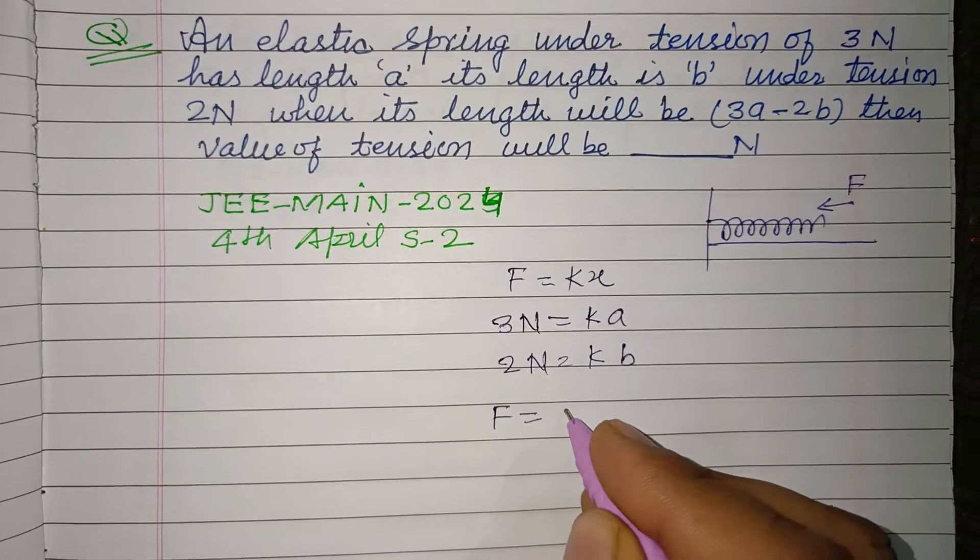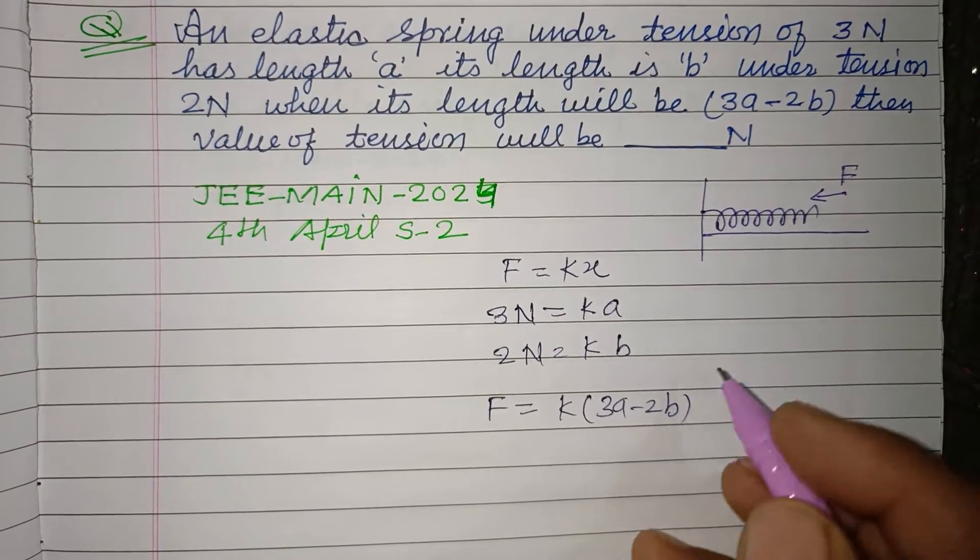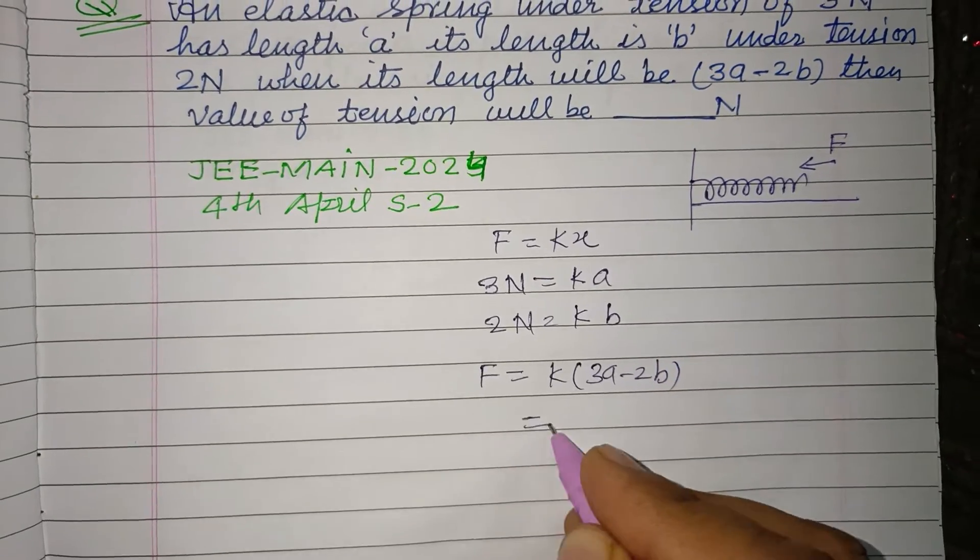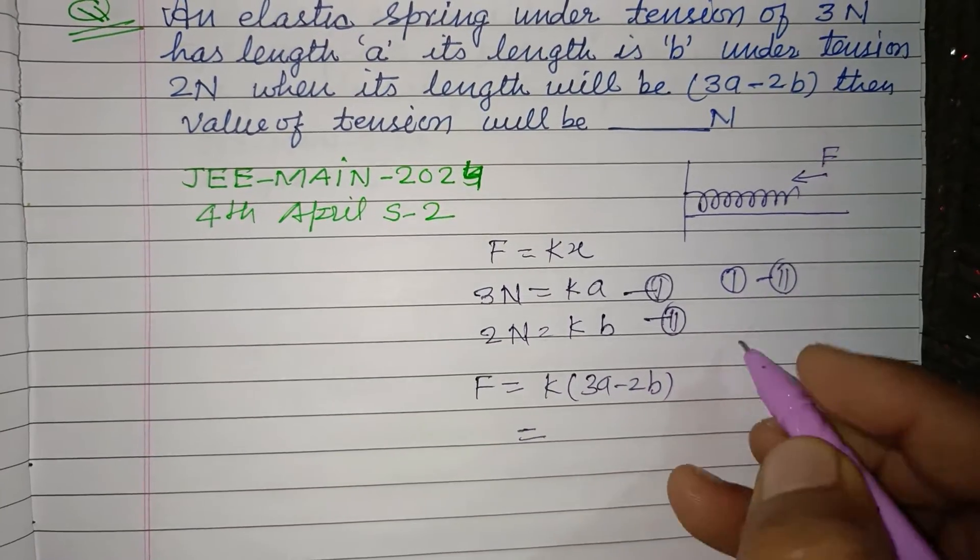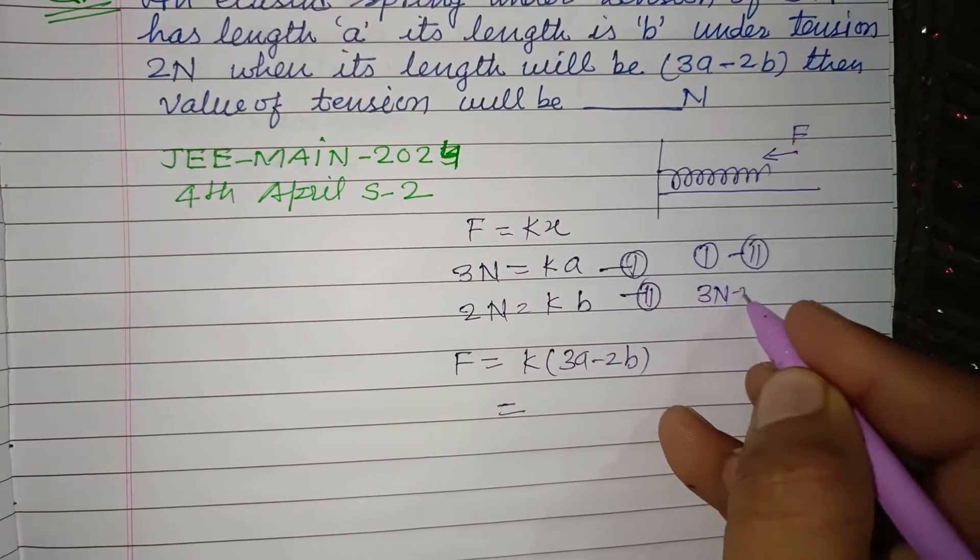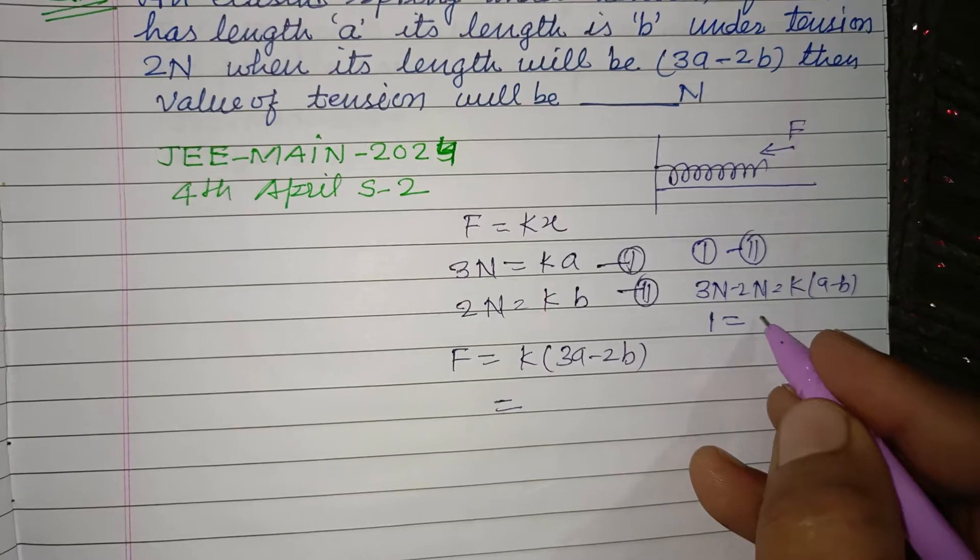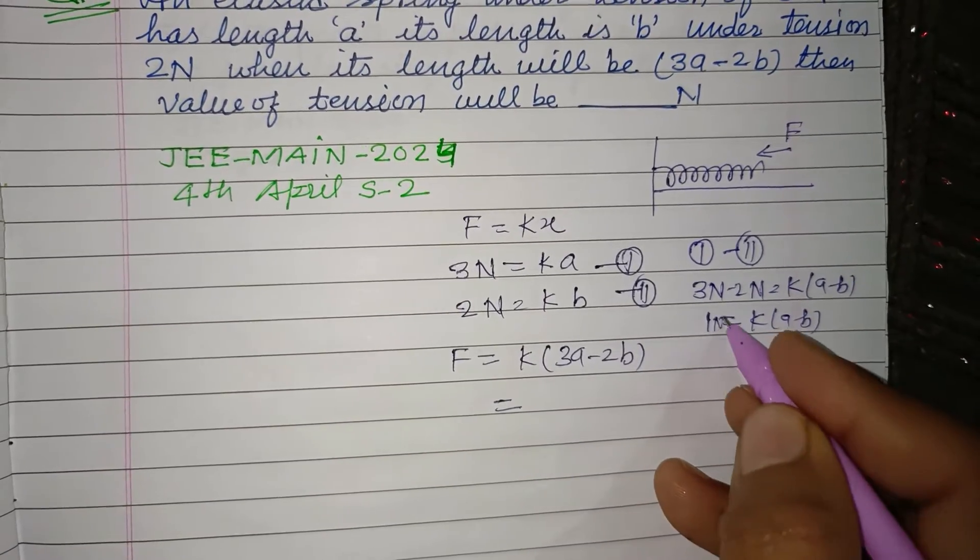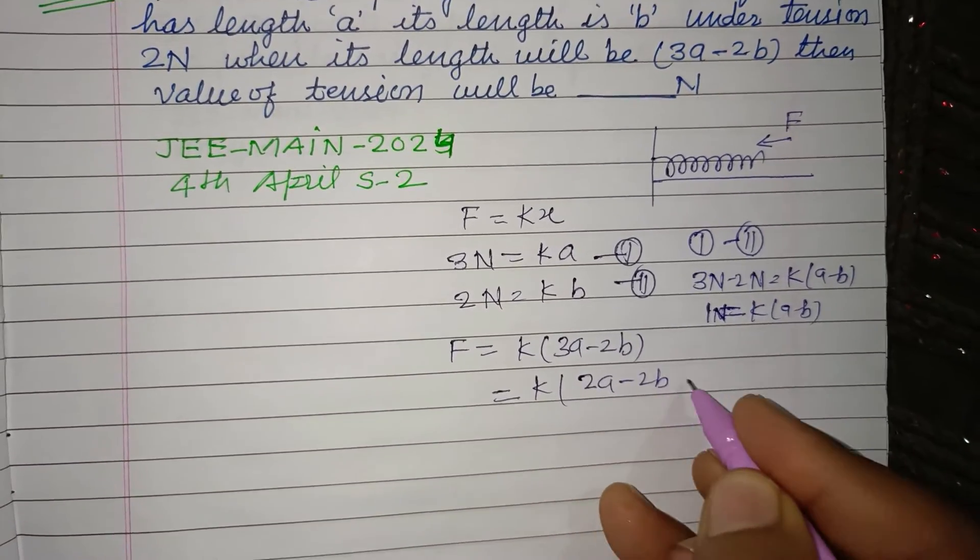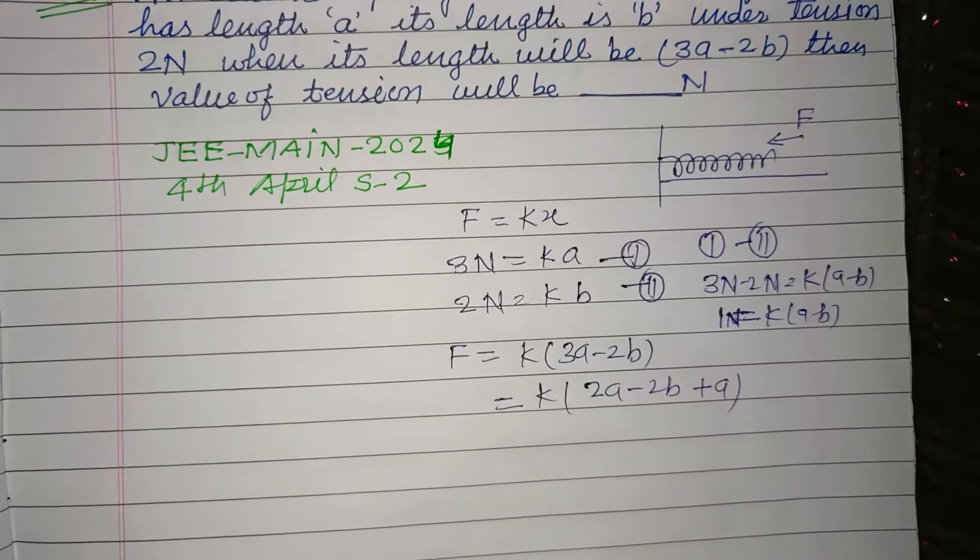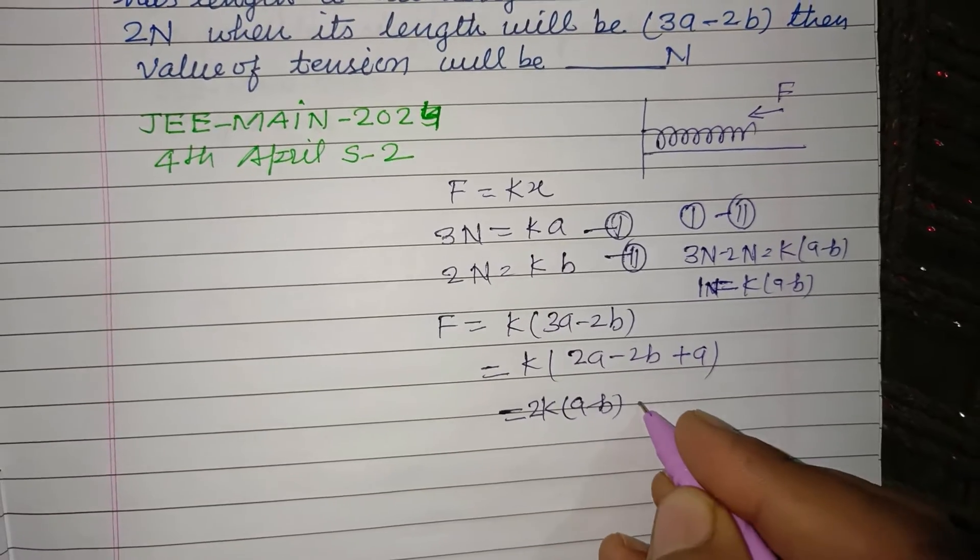Here we subtract equation one minus equation two. So 3 Newtons minus 2 Newtons equals k times (a - b). So this is 1 Newton equals k(a - b). Now writing (3a - 2b) as 2(a - b) plus a, so F equals 2 times k(a - b) plus ka.